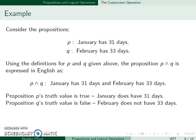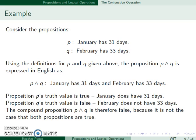We know that proposition P's truth value is true, since January does have 31 days. However, Q is false, since February does not have 33 days. This means that P and Q is false, because it's not the case that both of these propositions are true.